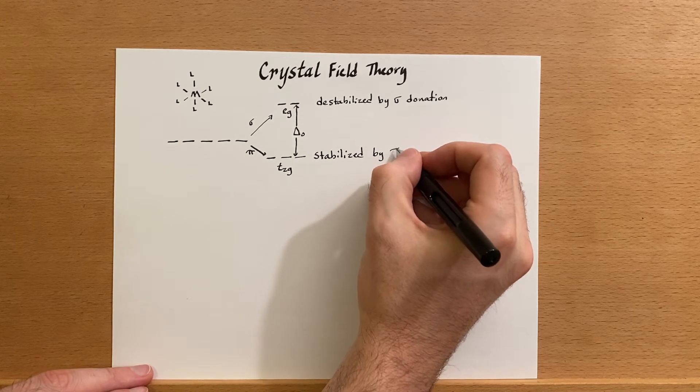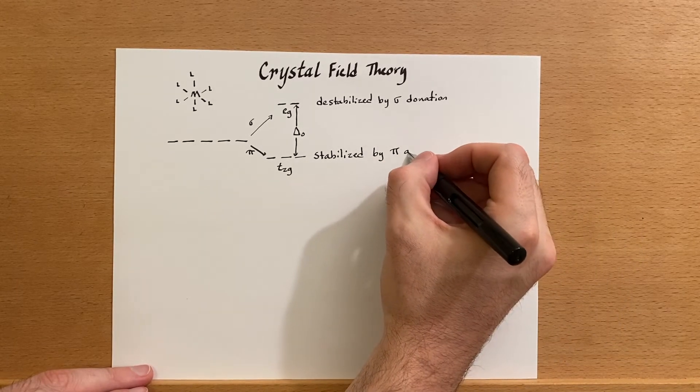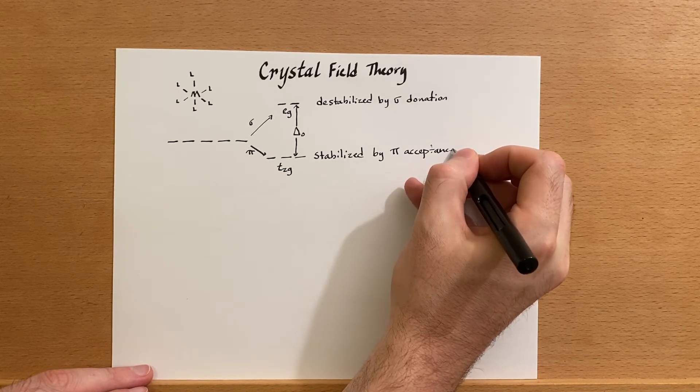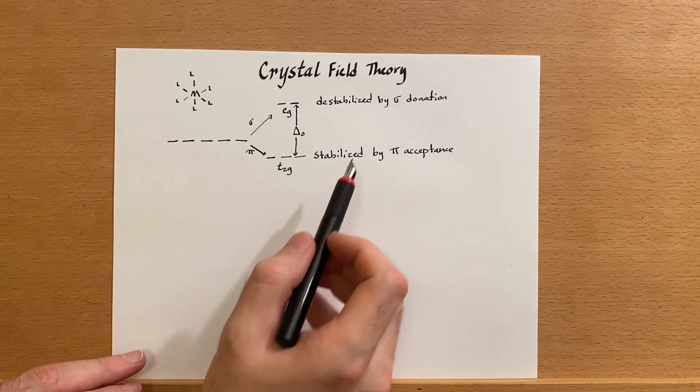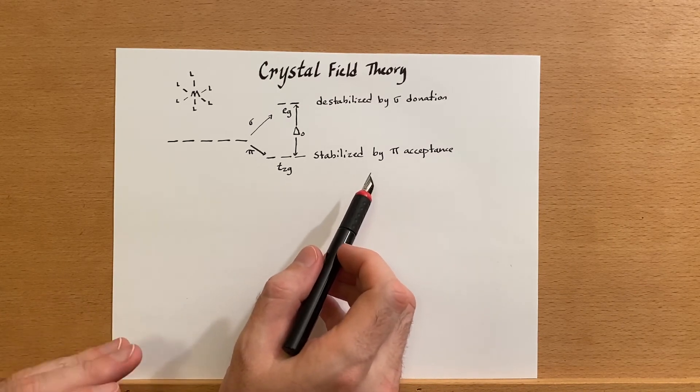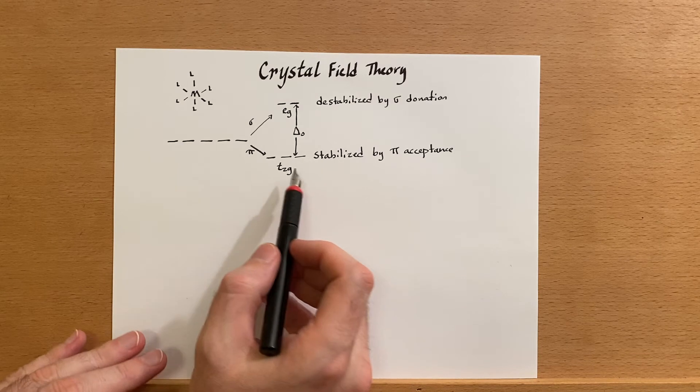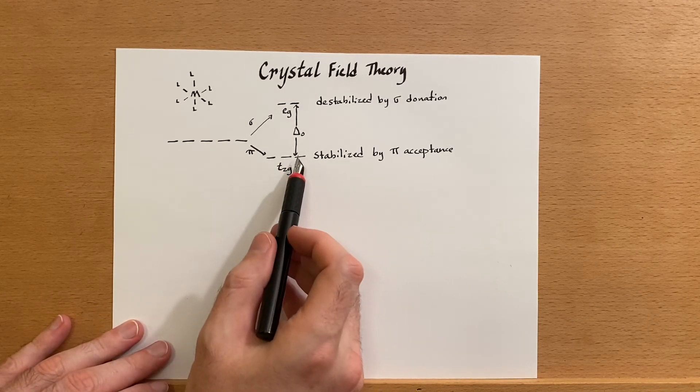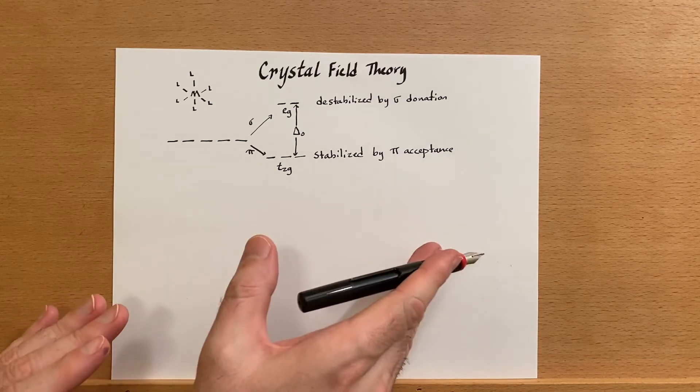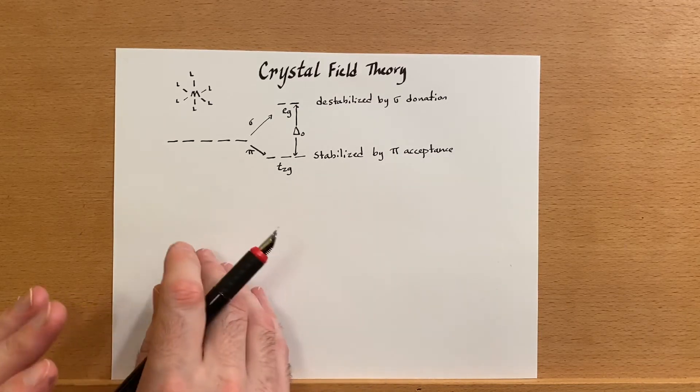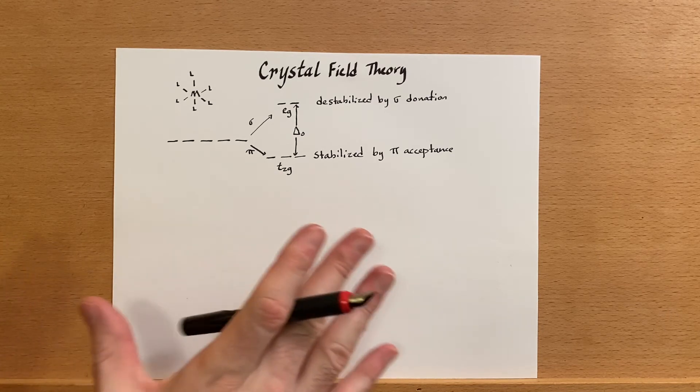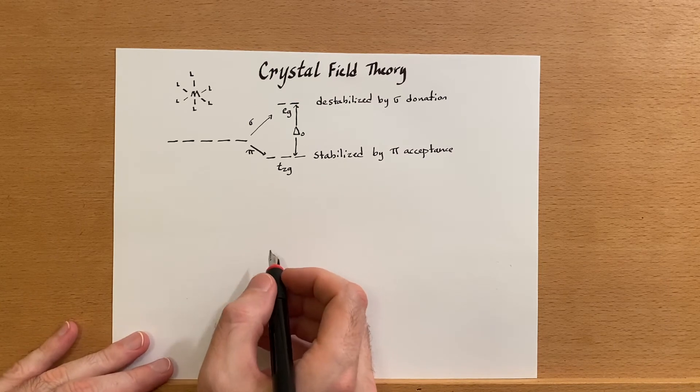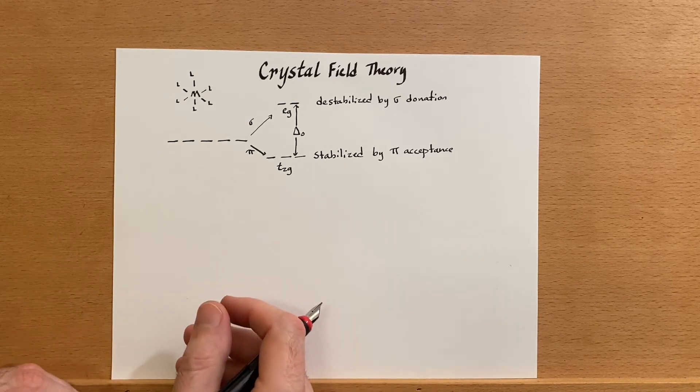And then we have stabilized by pi, and this is acceptance. This is where the ligand allows electrons from the metal to go to it, and that will delocalize these electrons here because these are the ones that would be donated back to the ligand. Anytime we can delocalize electrons, they get stabilized and thus would lower their energy.